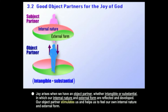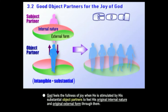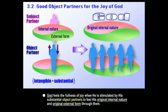Everyone is looking for a good partner — subject partner and object partner. God feels the fullness of joy when stimulated by His substantial object partners, which is us, to feel His original internal nature and original external form. This is our purpose in life: to be able to reflect God's own original internal nature and original external form.